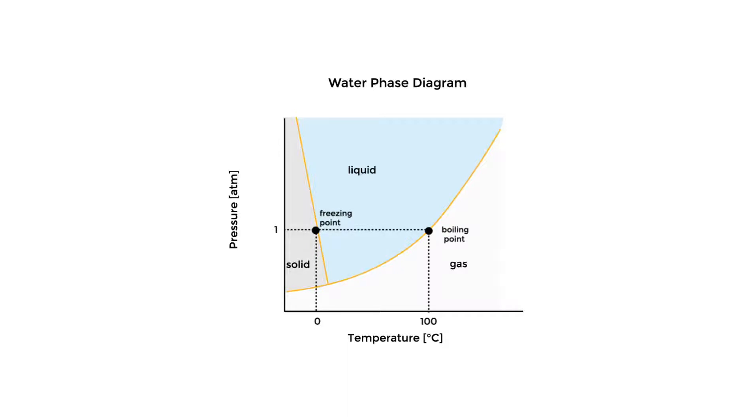But, if I lower my pressure down to 0.006 atmospheres and cool my water down to 0.01 degrees C, I achieve what's called a triple point, where liquid water, water vapor, and ice can all exist at the same time. Wild, right?